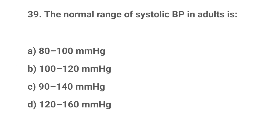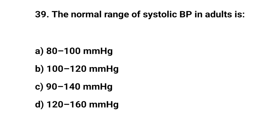Question No. 39. The normal range of systolic blood pressure in adults is? The right answer is C: 90 to 140 mmHg.